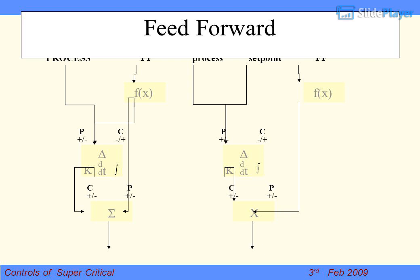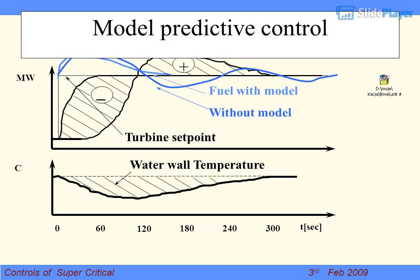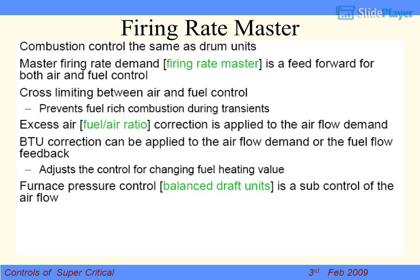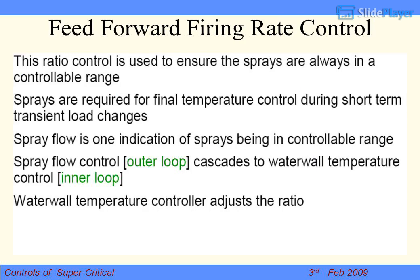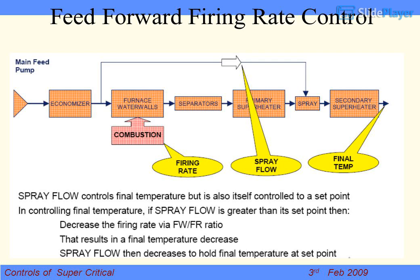Model Predictive Control is shown with and without model, comparing the effect on turbine setpoint, water wall temperature, and firing rate master. Feed forward firing rate control is a key component of this system.